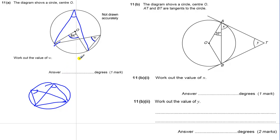So W is going to be a half of 84, half times 84, which is 42 degrees for one mark.